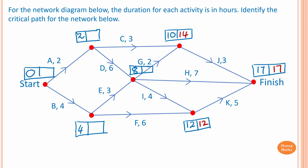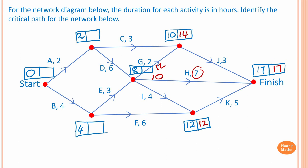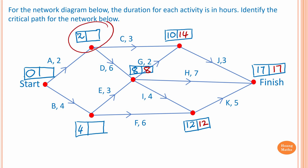To work out the latest starting time for J: fourteen minus two is twelve, and seventeen minus seven is ten. Then twelve minus four is eight, which is the smallest value, so we write eight here.